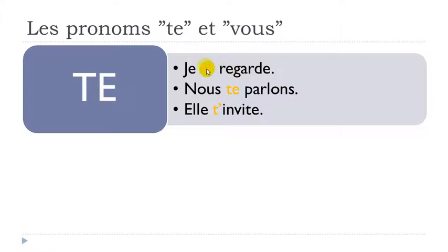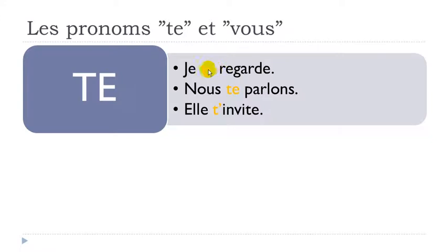And then te — te is you. So in English you will put te after the verb, like 'I look at you,' 'I watch you,' but in French it will always come before the verb: je te regarde.